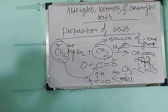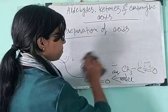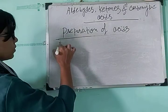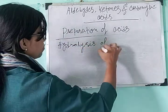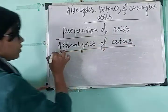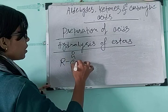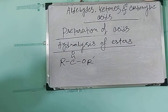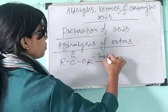The next important method is the hydrolysis of esters. If we just hydrolyze any ester — that is RCOOR' — the hydrolysis can be acidic hydrolysis or alkaline hydrolysis, either one can be used.